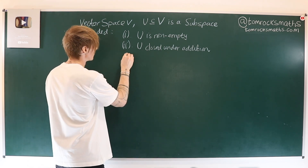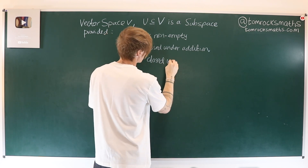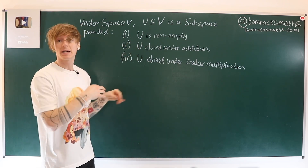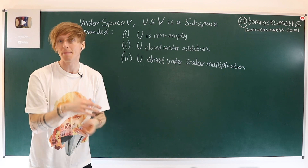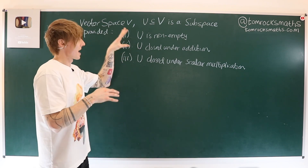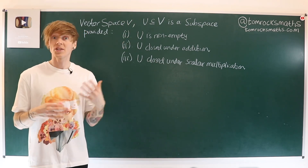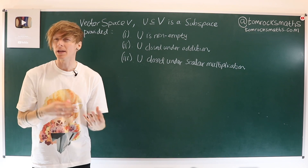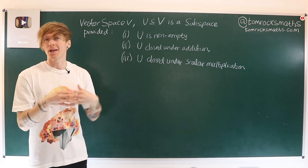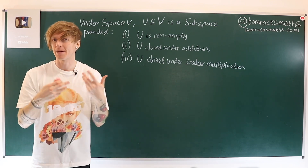Our third rule is that U must be closed under scalar multiplication. This means if we take a vector inside U and multiply by a scalar — usually referred to as lambda — we get something which is still within U. When checking these properties, it's actually more helpful to think about them algebraically, because it gives us a statement we can check mathematically.